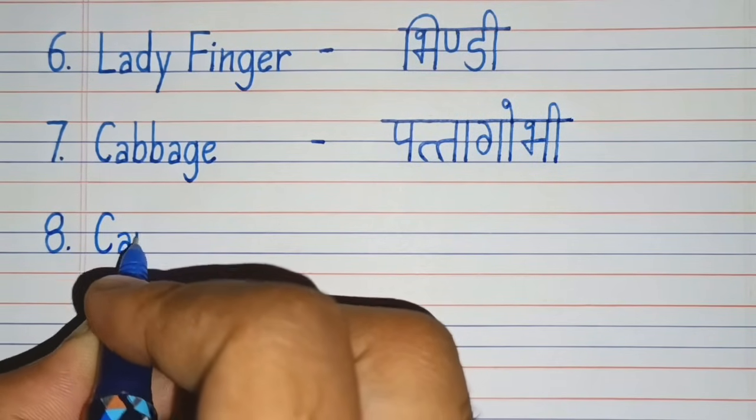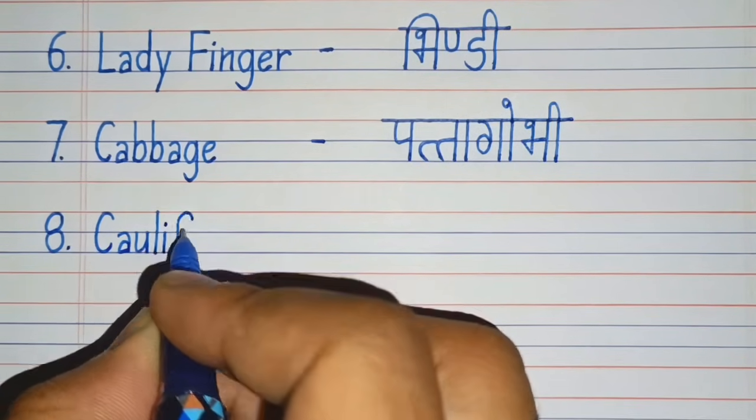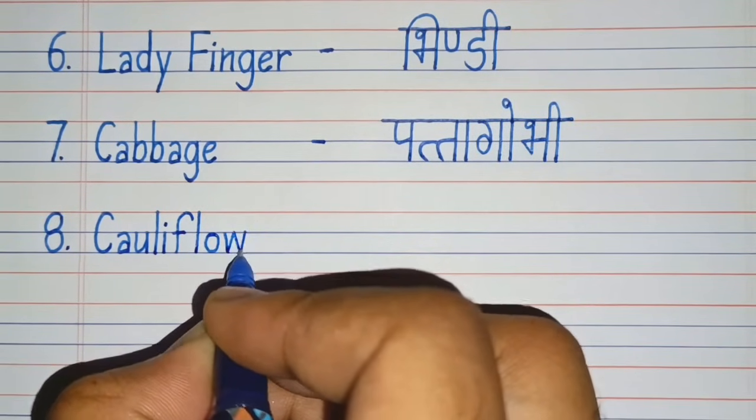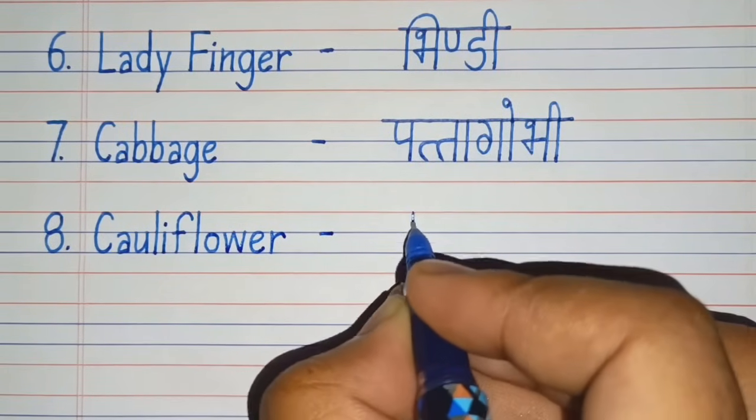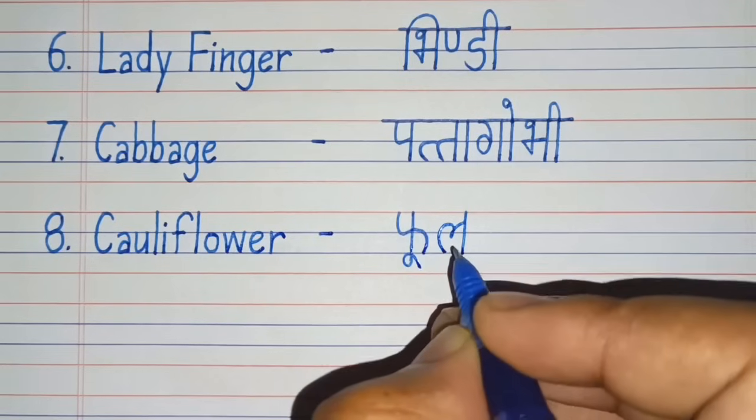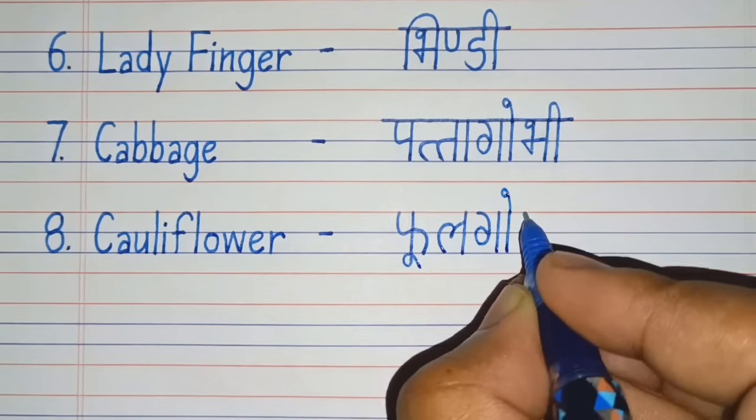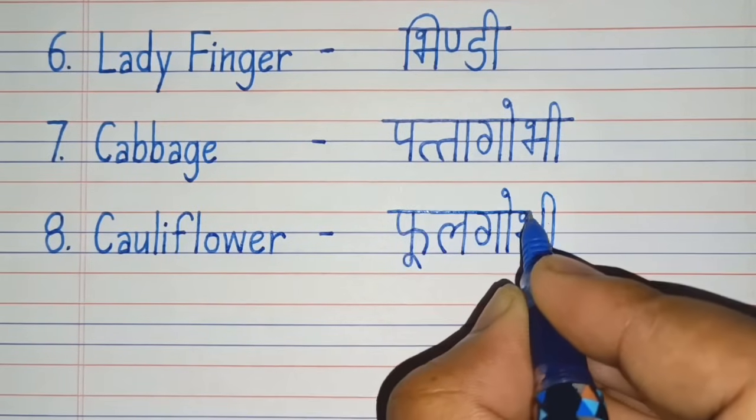Eighth number. Cauliflower. C-A-U-L-I-F-L-O-W-E-R, Cauliflower. Cauliflower means Phool Gobhi.